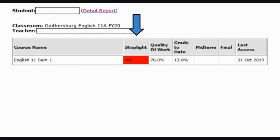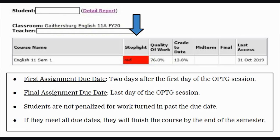Next to that, you will see a section called stoplight, and you will either see a green, yellow, or red entry in that box. This stoplight system is based around the due date structure for the course. Please note that the first due date for assignments is set as two days after the first day of the OPTG session, and the final assignment due date is on the last day of the OPTG session.